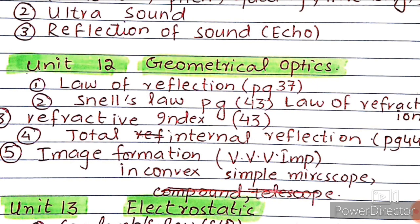Fifth topic is the most important topic of this chapter: image formation in convex lens. Practice the diagram of simple microscope for this chapter.